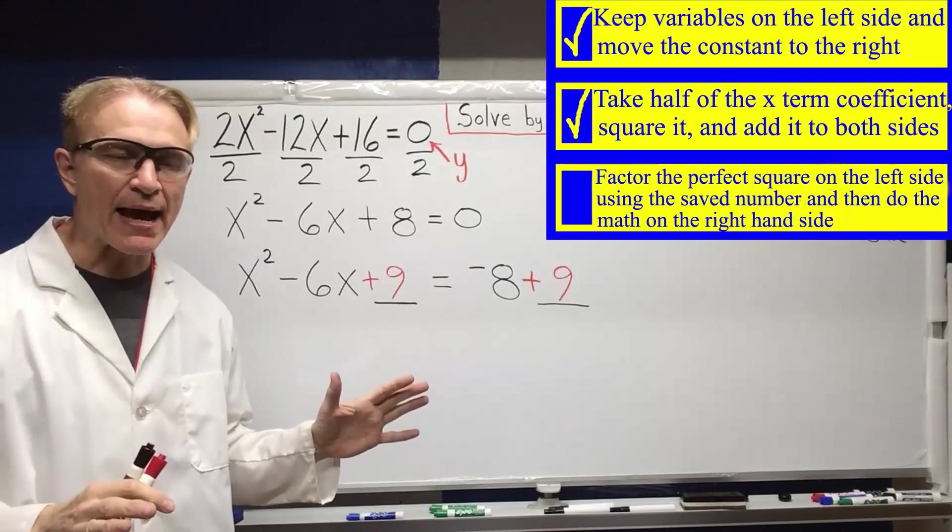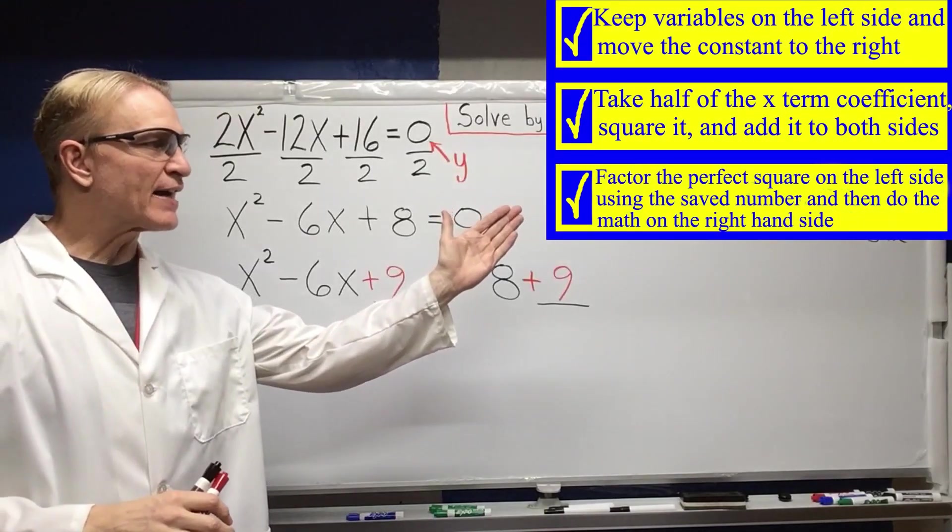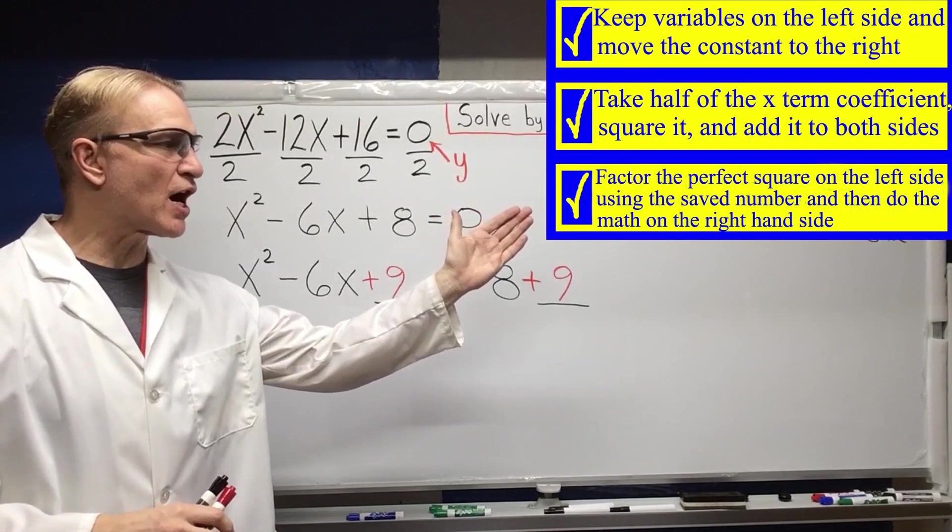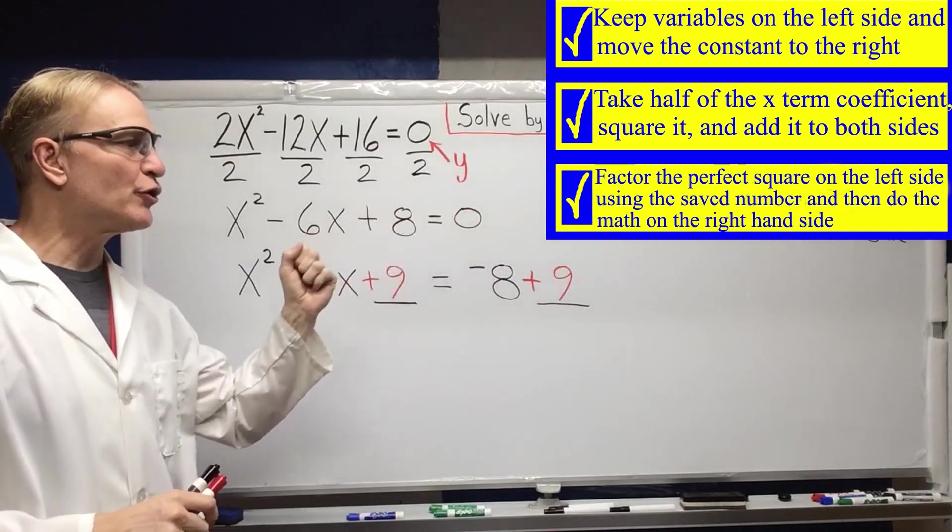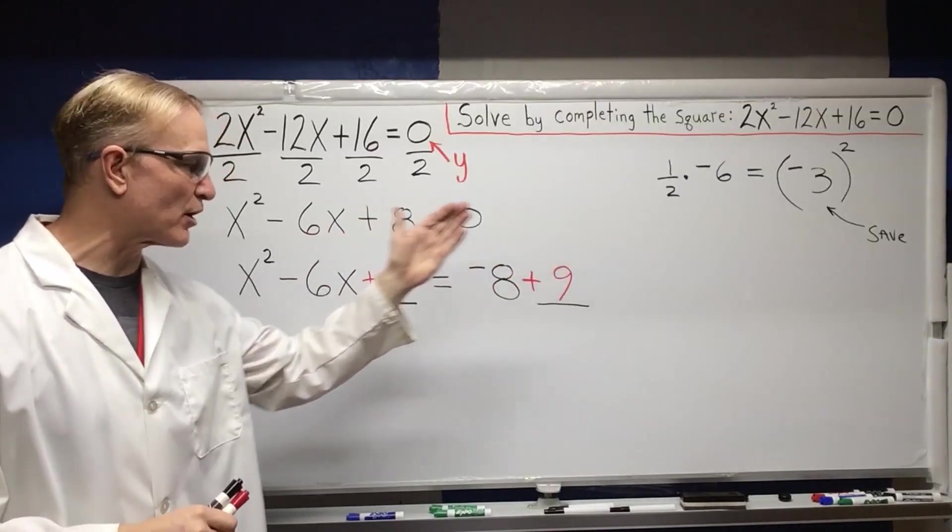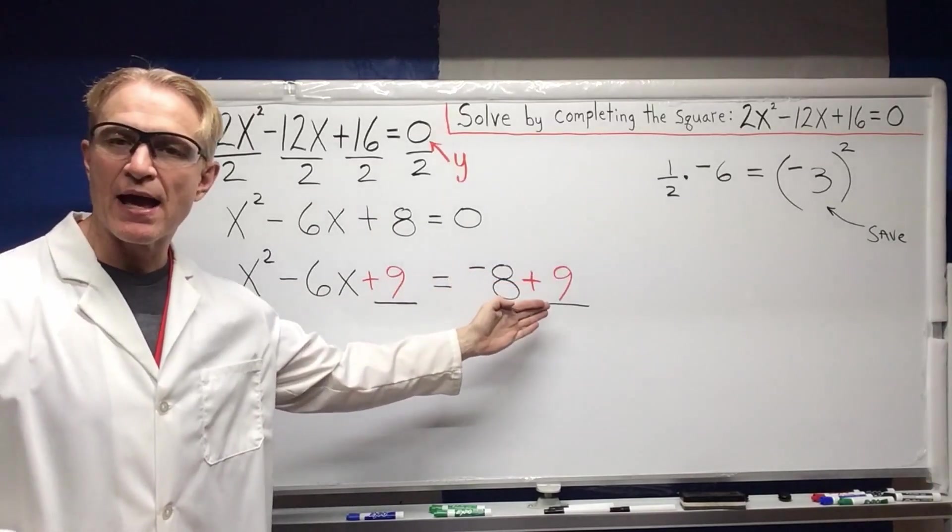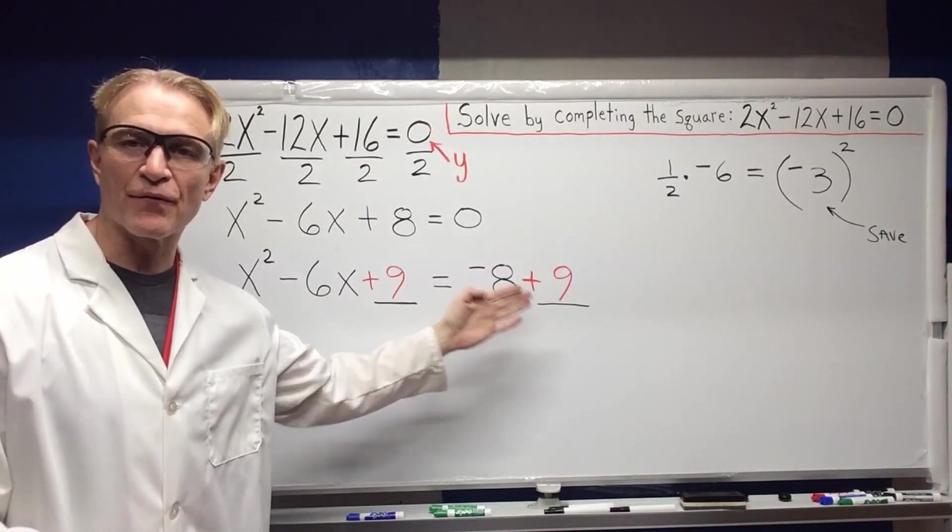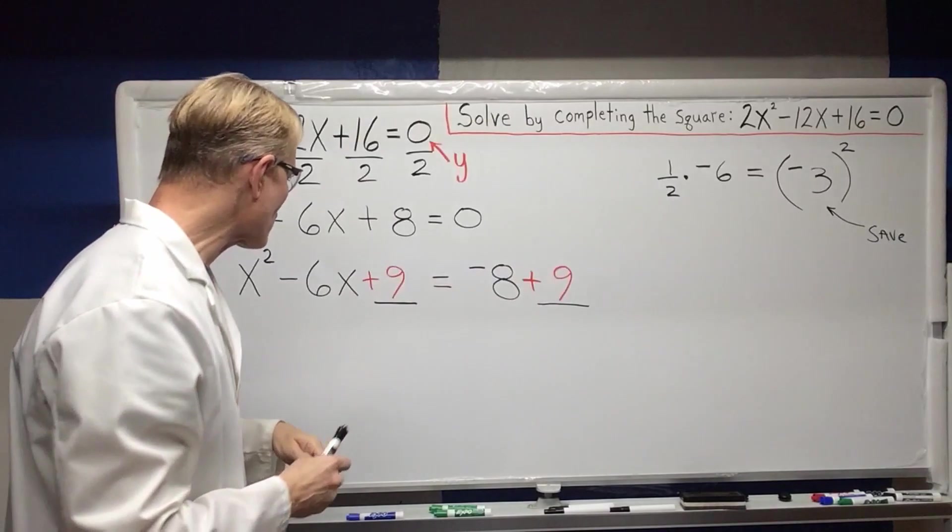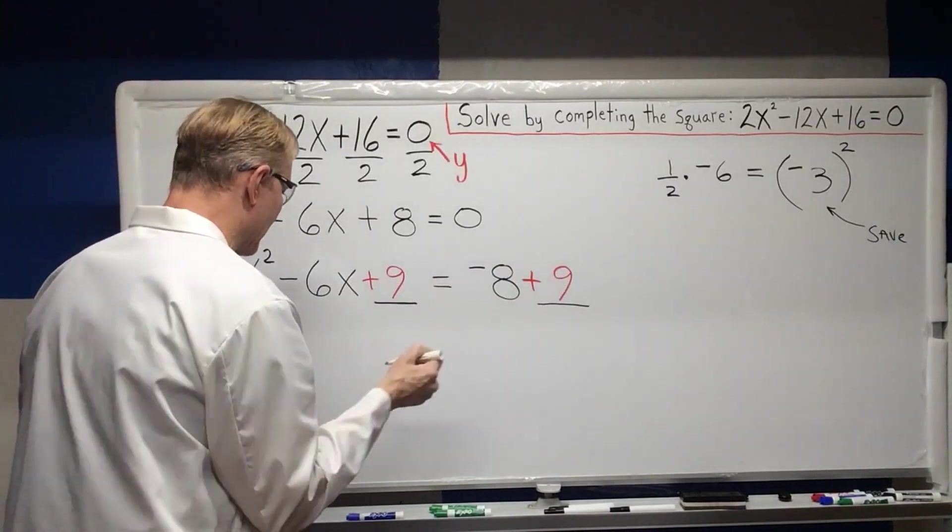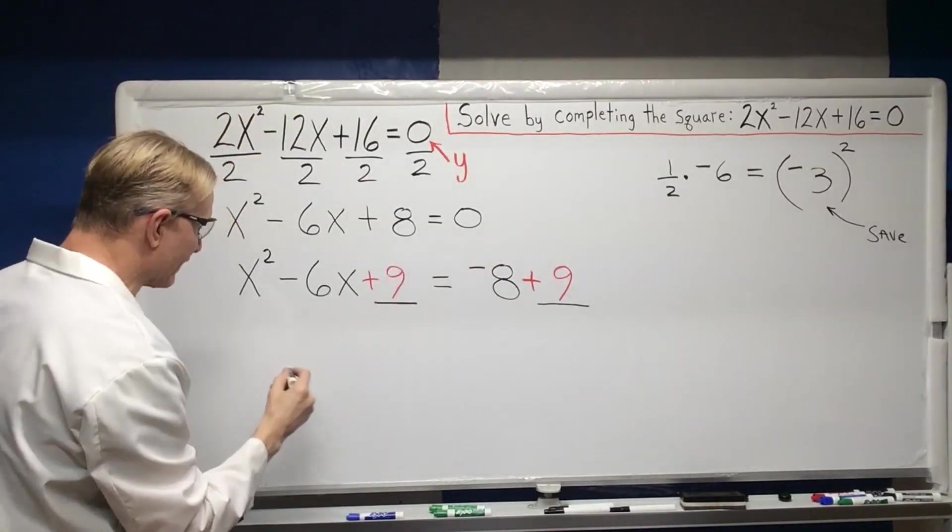Okay, next step. Factor the perfect square on the left side using the saved number and then do the arithmetic on the right hand side. All right, factoring this is simple. If I know that negative 3 was there,